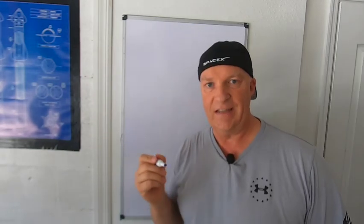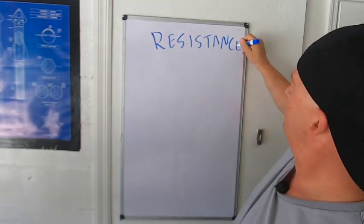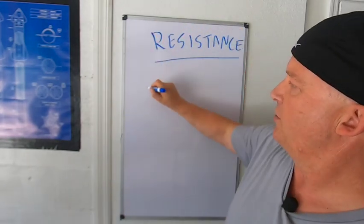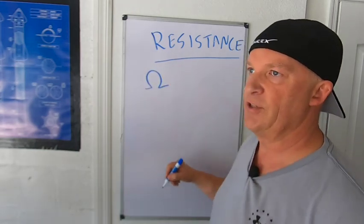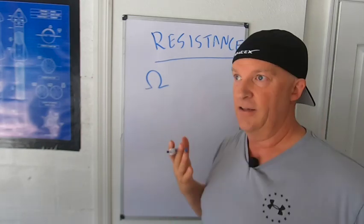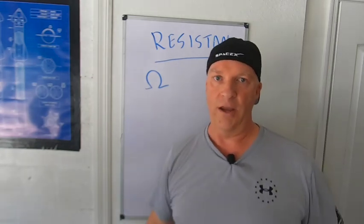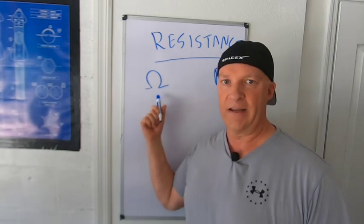Resistance is the inhibition to that flow. Resistance has the unit ohms, and the letter designation for resistance is R. The unit is ohms, and it's a Greek omega symbol.